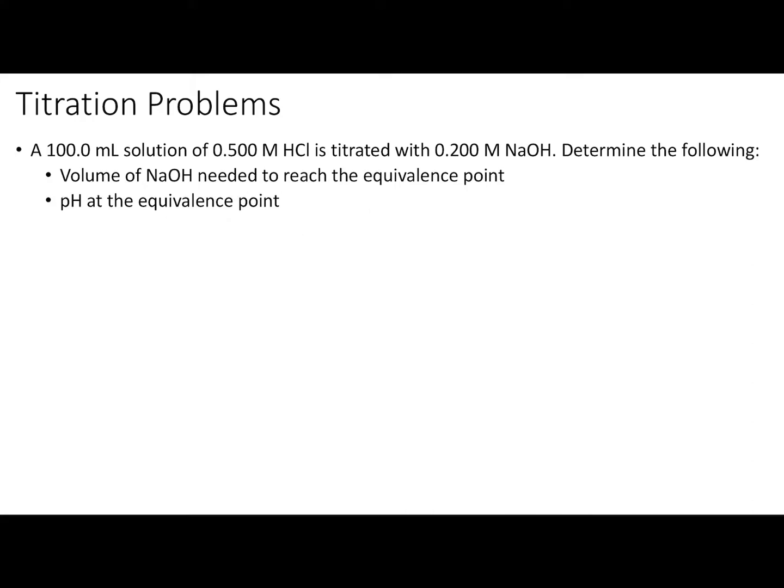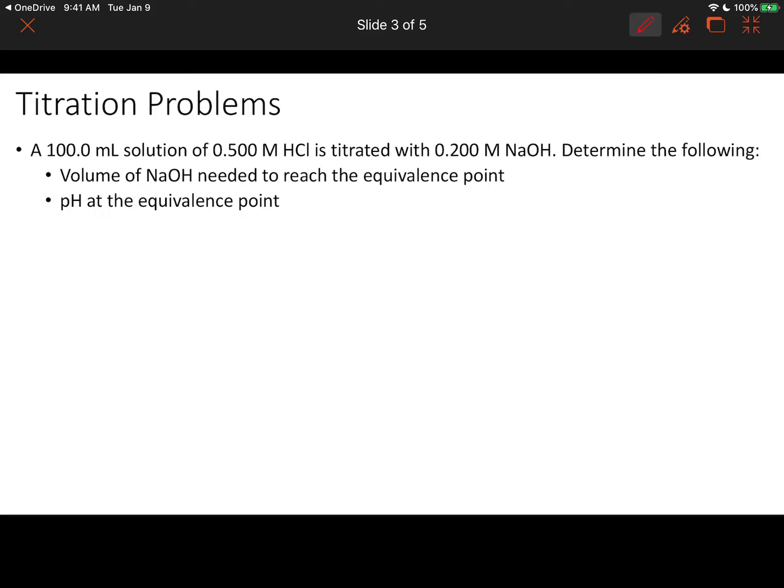The best way to start any set of titration calculations is to calculate the volume at the equivalence point — no matter what type of titration you have, that's the best place to begin. The first step is writing the acid-base reaction that occurs during the titration. In this case we have HCl + NaOH → NaCl + H₂O. Both are a strong acid and strong base respectively, and they react in a one-to-one stoichiometric ratio. To find the equivalence point volume, we first calculate moles of HCl, then use the mole ratio to find moles of NaOH needed, and finally the volume of NaOH.